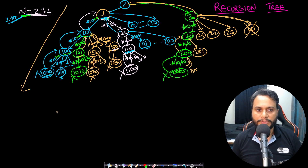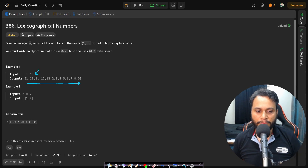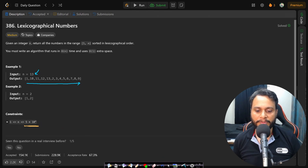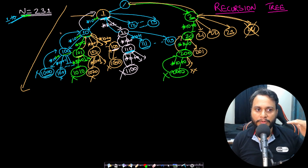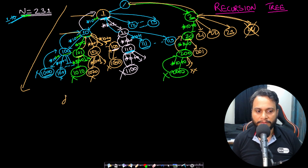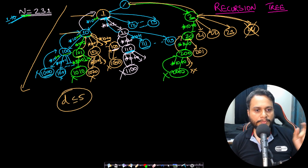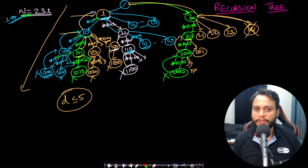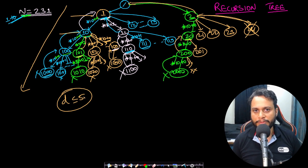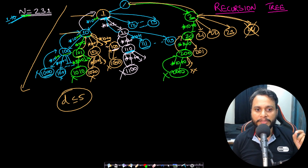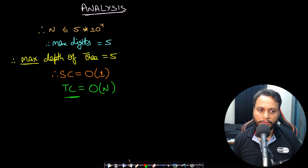The depth of recursion equals the number of digits. The problem states n can be up to 5×10^4, a 5-digit number. Each level increases the digit count by 1, so the depth is no more than 5 — a constant. Therefore the recursion call stack space is O(1). Since we iterate over each number exactly once, the time complexity is O(n).